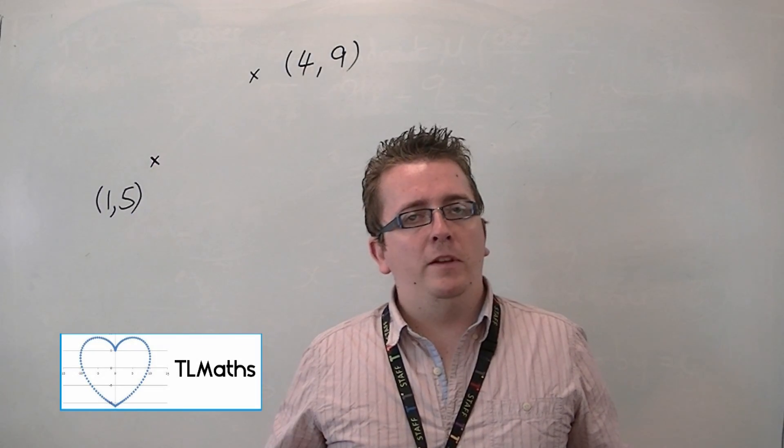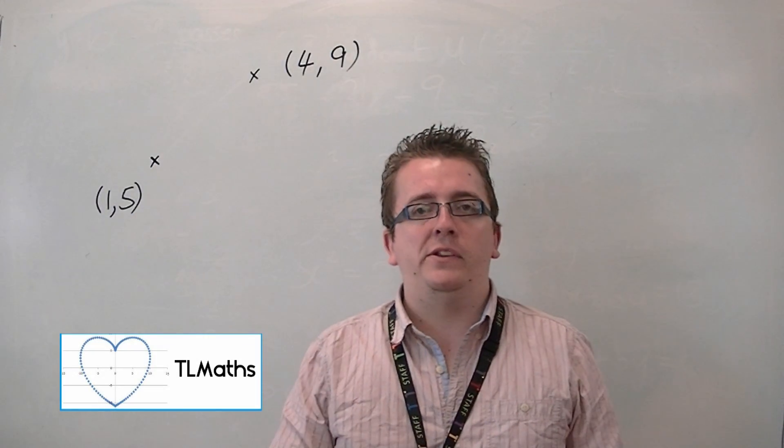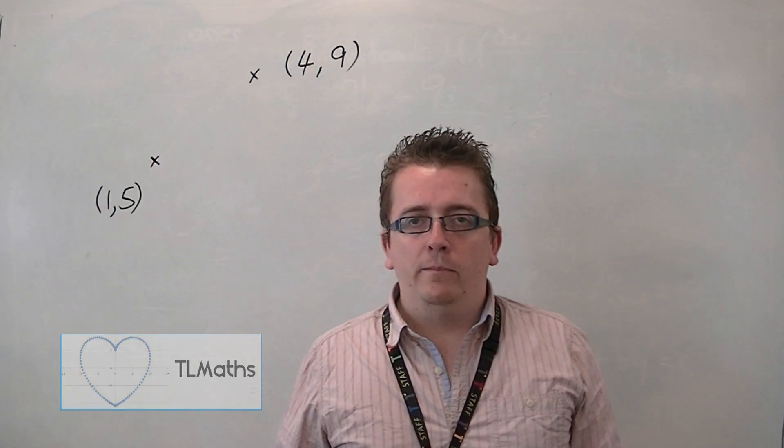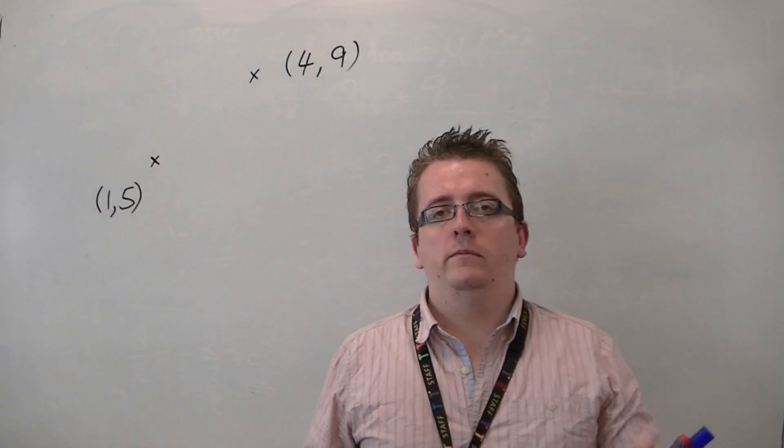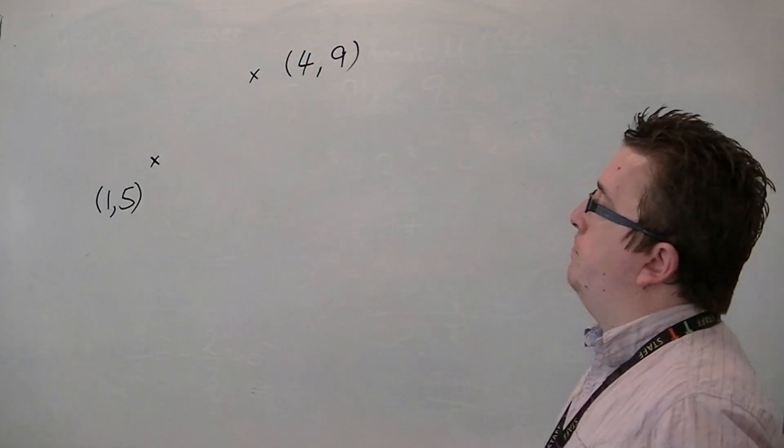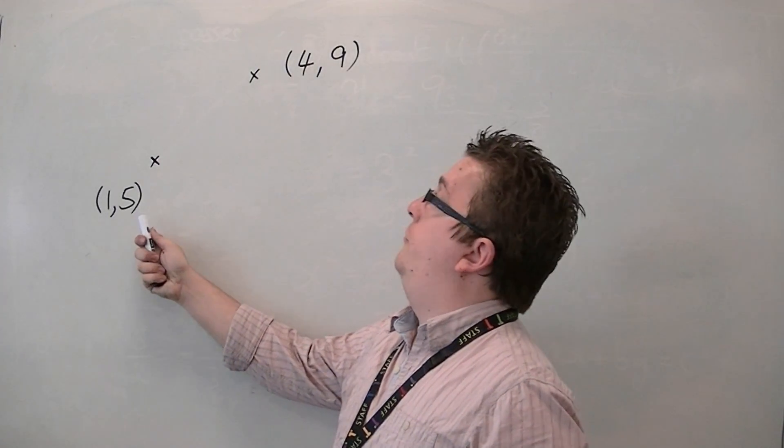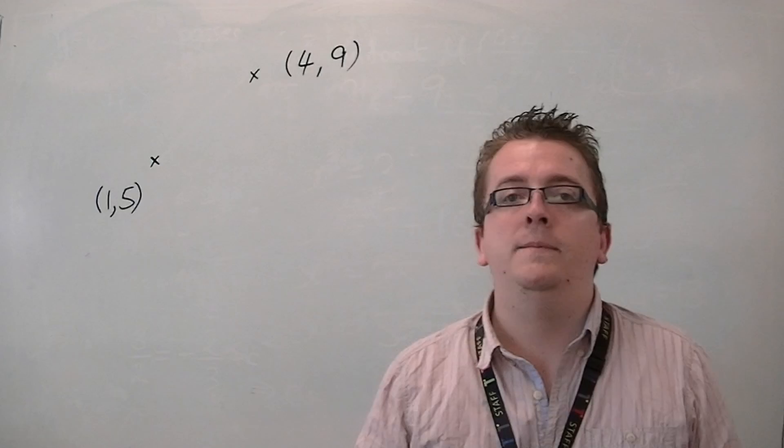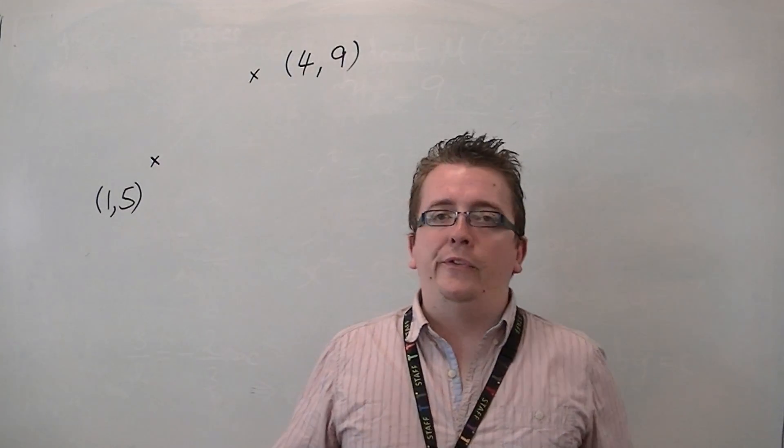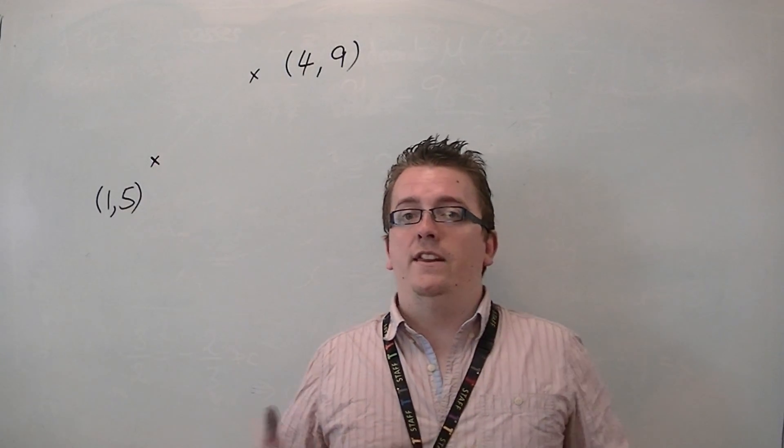In this video, we're going to be looking at how you can find the distance from one coordinate to another. So I'm going to go with a basic example of finding the distance between the coordinates of 1,5 to 4,9. I've chosen the numbers so that we get a nice answer.